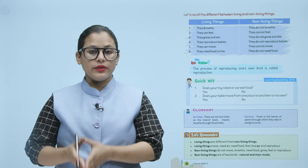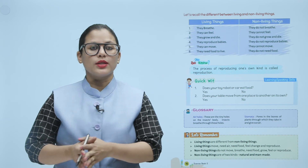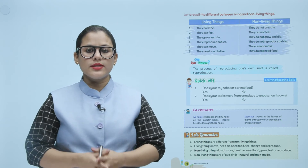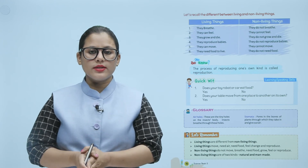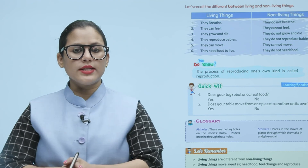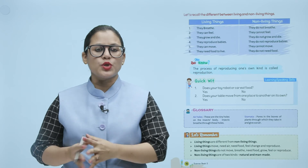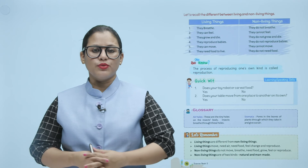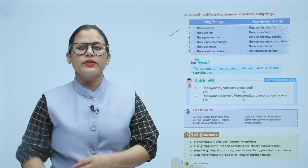Let's recall the difference between living and non-living things. Living things breathe; non-living things do not breathe. Living things can feel; non-living things cannot feel. Living things grow and die; non-living things do not grow and die. Living things reproduce babies; non-living things do not reproduce. Living things can move; non-living things cannot move. Living things need food to live; non-living things do not need food.